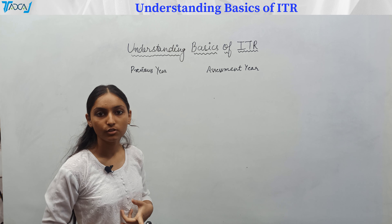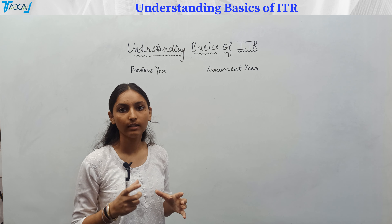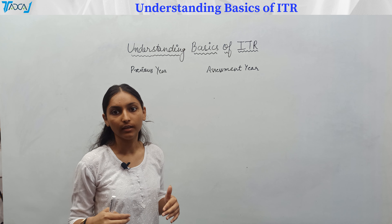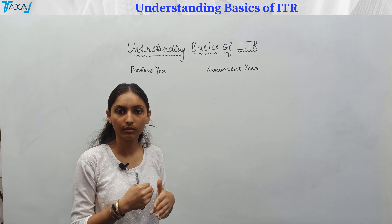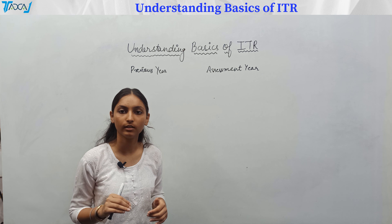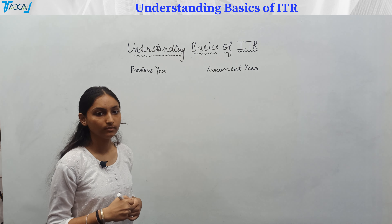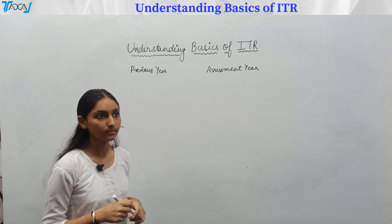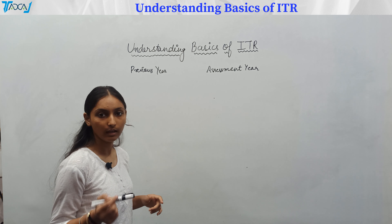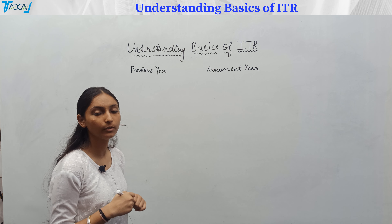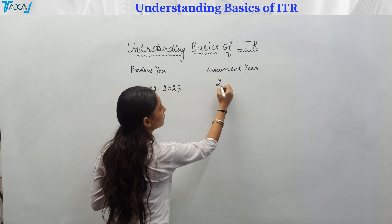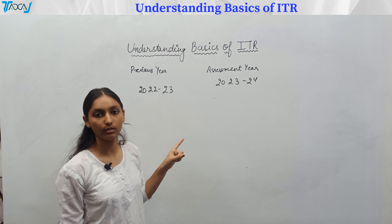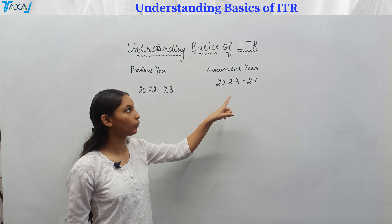The previous year, also called the financial year or tax year, is the year for which we pay tax. For example, if your financial year started in April and ended on 31st March, that is the previous year — say 2022-23. The assessment year is where we assess our tax for that previous year, so the assessment year would be 2023-24.